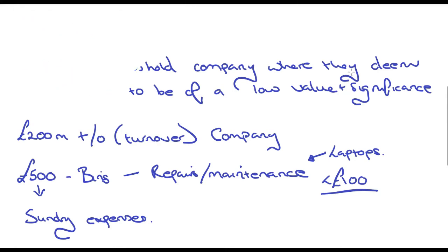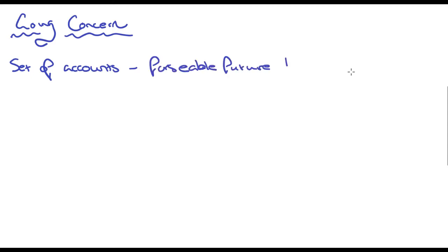So let's move on here. So let's go over going concern. So there isn't a great deal to say about going concern in terms of what they can ask for in the exams. But basically, if I looked at a company, if I'd looked at a set of accounts and I believe that they can trade for the foreseeable future, so the next 12 months, then they are classed as a going concern.